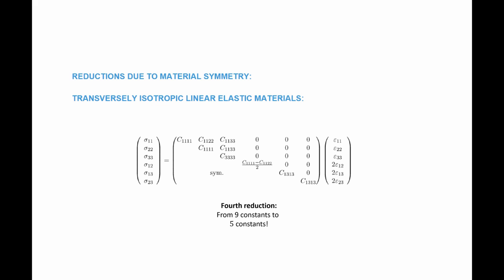If we assume the plane of isotropy is the plane of e_1 and e_2, then the relationship between sigma_11 and epsilon_11 is defined by constant C_1111. Since e_2 is also in the plane of isotropy, the same constant appears for that direction as well. When you count the number of independent constants, you find only 5.